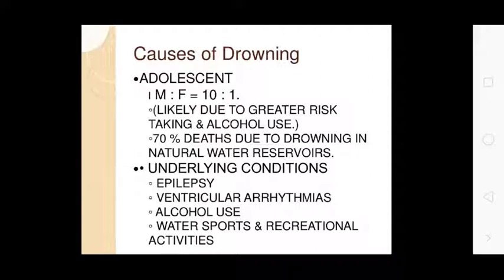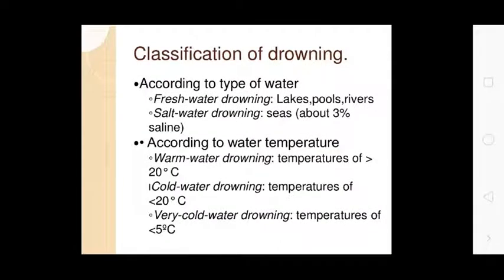Underlying conditions that predispose to drowning include epilepsy, ventricular arrhythmias, alcohol use, and water sports and recreational activities. Classification of drowning according to type of water includes fresh water drowning — lakes, pools, rivers — and salt water drowning — seas.